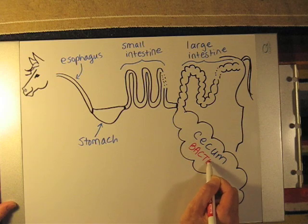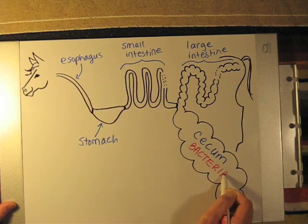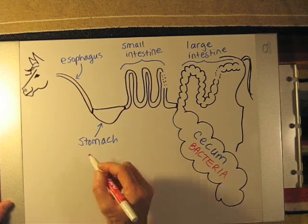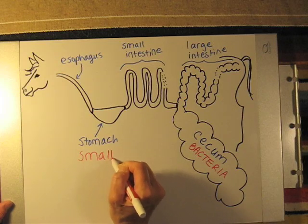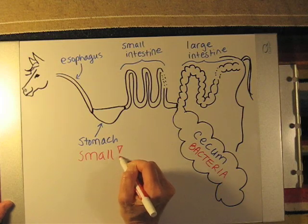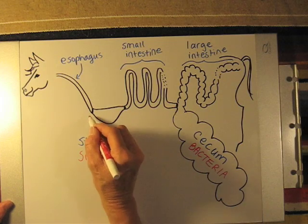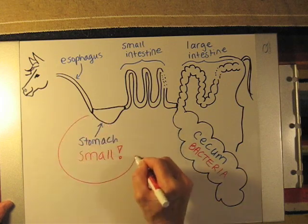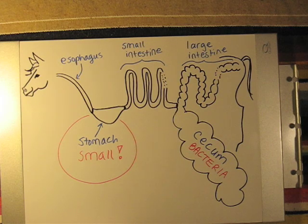It's actually the bacteria and other microbes that do the digesting. The horse's stomach is very small relative to its body size, and the stomach is identical to that which you would find in a pig or other monogastric animal.